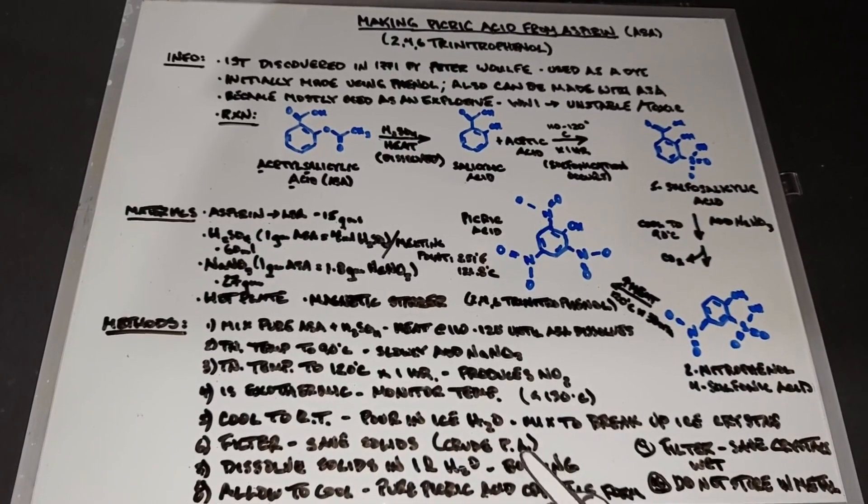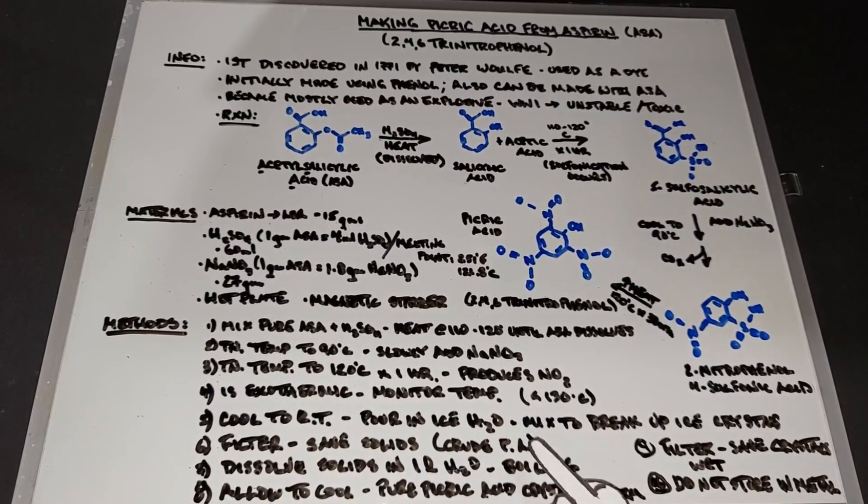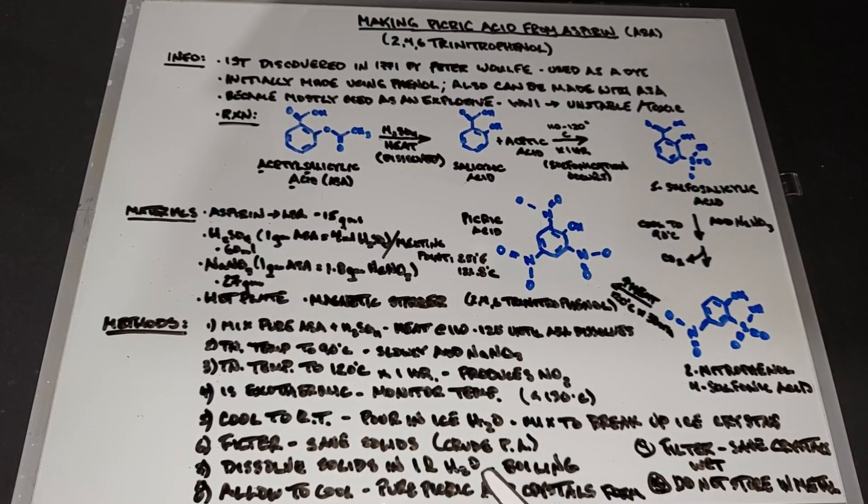You now take your crude picric acid crystals and dissolve them in one liter of water. Now, picric acid does not dissolve well in room temperature or cool water. However, if you get enough water and raise the temperature enough, typically to boiling, you can dissolve all of these crude crystals in this water. You want to do that until they're dissolved or gone. At that point, allow the liquid to cool. The slower it cools, the larger the crystals you get. Your pure picric acid crystals will start to form in this liquid.